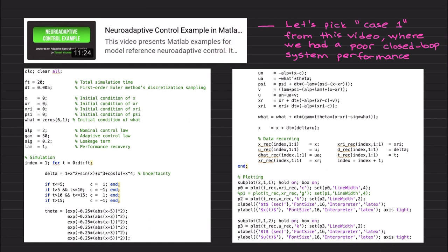When we were adding neurons in the first case, before we added that bias term and additional neurons to improve the performance of the neuroadaptive control architecture for case one, we achieved a poor closed-loop system performance. I am going to show the same performance so that you don't need to turn back to that video.